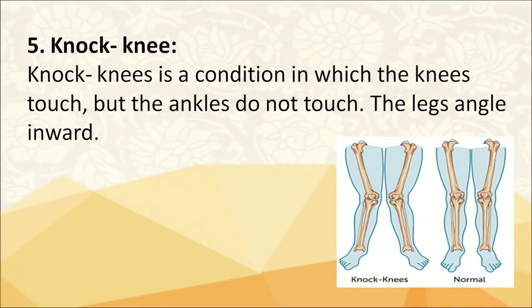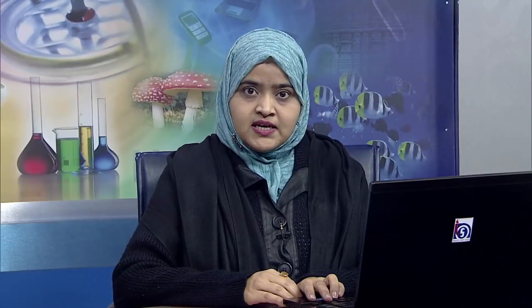The fifth defect is knock knee — a condition in which the knees touch but the ankles do not touch. The cure includes standing on a woollen curved plank, doing 5 to 7 sit-ups a day, cycling, opening knees in a V-shape, and placing a pillow between legs while sleeping.